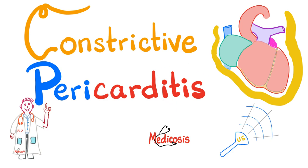Why 'itis'? Because it's inflammation — inflammation of the sac that surrounds the heart: pericarditis. We have many types, including dry pericarditis and pericarditis with effusion, known as pericardial effusions. These effusions could be transudative, exudative, hemorrhagic, or chylous. There is also adhesive pericarditis, and today's topic, constrictive pericarditis, where the heart is constricted within a very thick pericardial membrane.